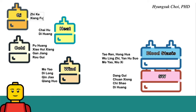Ji Ke, Xiang Fu, and Zhegeng regulate the Qi. Ji Ke is especially for the middle jiao. Chai Geng is for the upper jiao, like the lung. And Ji Ke is for the stomach. When you combine these optional parts to the fundamental parts, you can make Chuyutang.